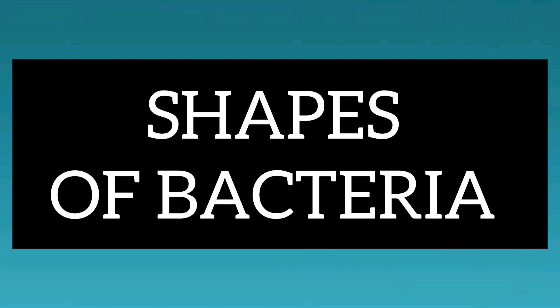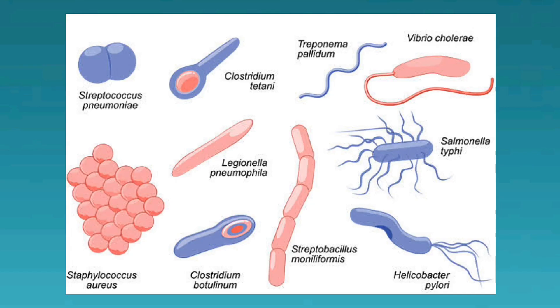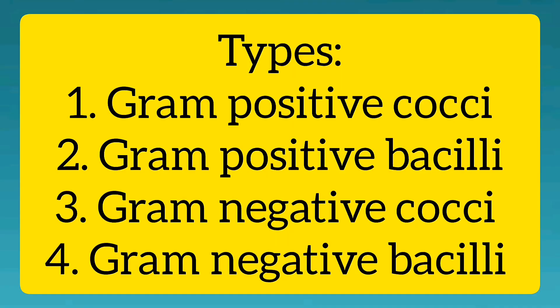Today we are going to see about shapes of bacteria. There are many types of bacteria. First one is Gram positive cocci, then Gram positive bacilli, then Gram negative cocci and Gram negative bacilli.